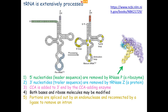Moving on to tRNAs — these are much smaller. The rRNAs were thousands of bases long; tRNA sequences are only about 70 to 100 bases long, so fairly short. The example shown is for tRNA-tyrosine. There are roughly 20 of these in the cell, all with slightly different sequences but the same general shape.